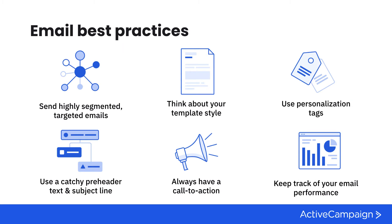Let's talk through some email best practices as you start to build your campaigns — these are crucial for laying the foundations for success. First, send highly segmented, targeted emails. Using segmentation and the data you have on your contacts will get them the emails they're looking for. Think about your template style and how you're communicating with your contacts — templates should reflect your branding. Using personalization tags related to your custom fields lets you take a one-to-many message and make it feel very personalized and one-to-one.